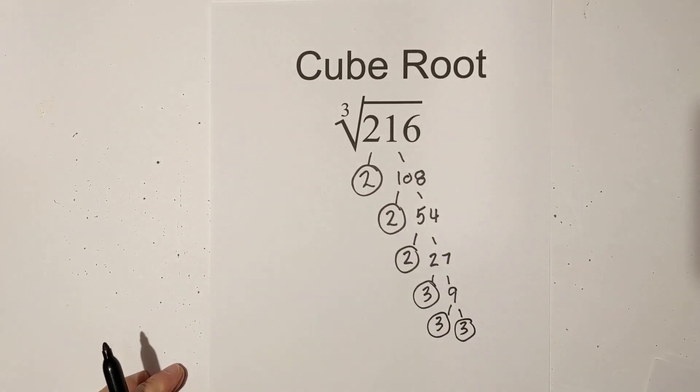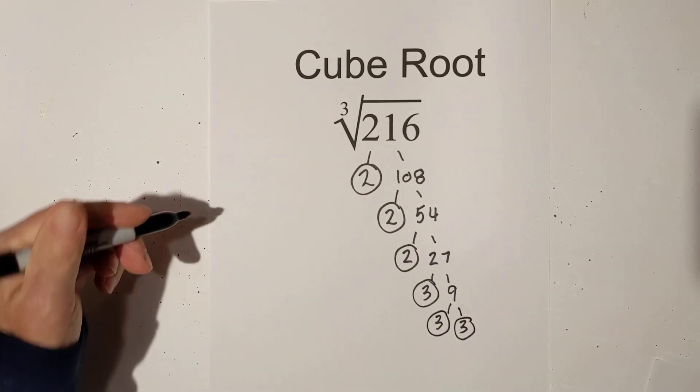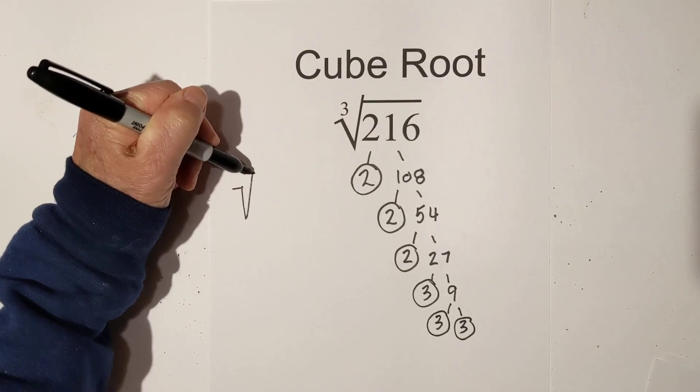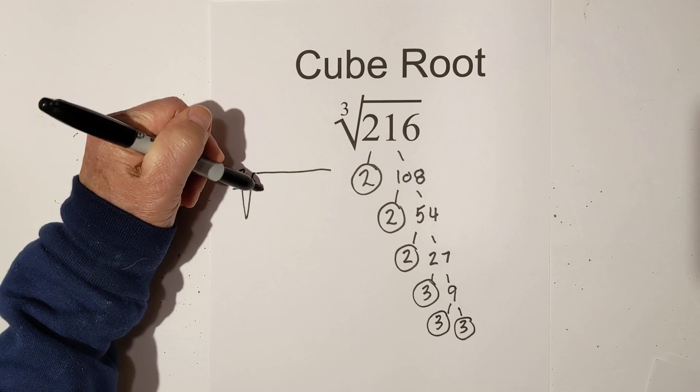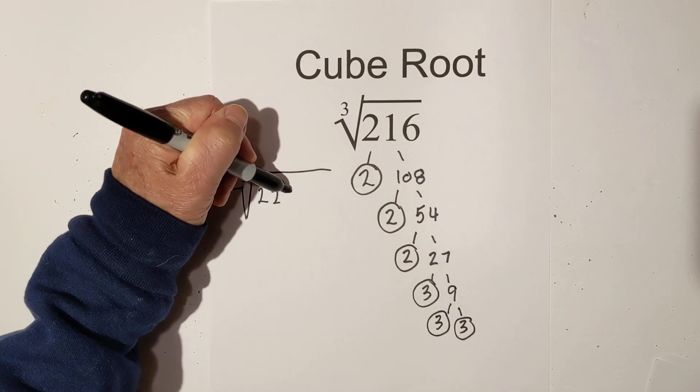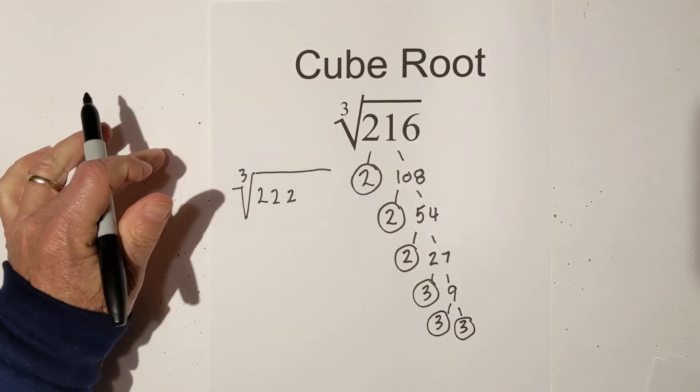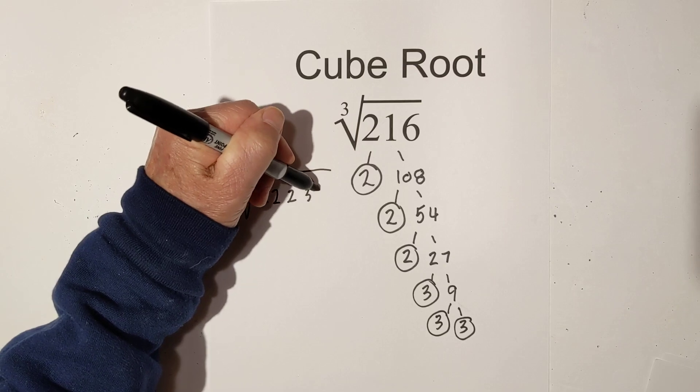So now I have all of my prime numbers. So now what I can do is put them all under the cube root sign. So I have a 2, a 2, a 2, so those are these 3 2's, then a 3, a 3, and a 3.